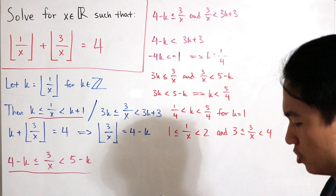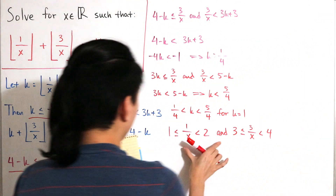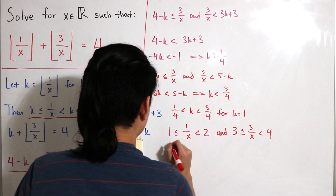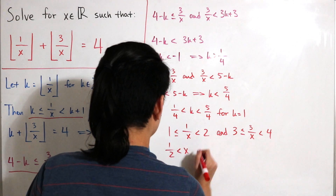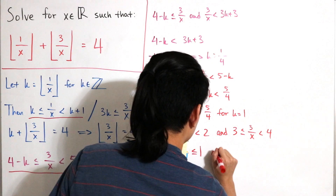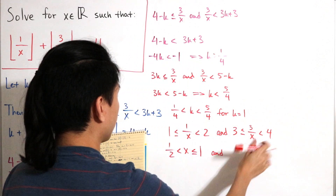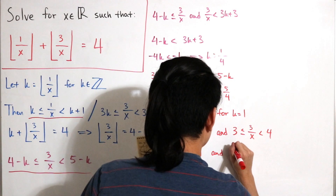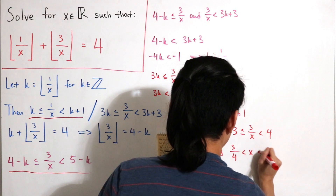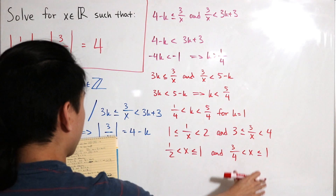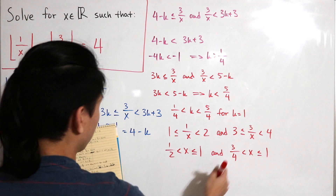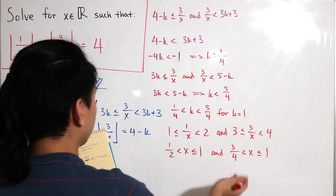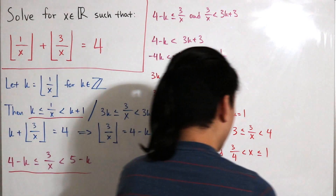Now we flip the reciprocals in both inequalities, which also flips the inequality signs. The first gives one half strictly less than x, less than or equal to 1. The second gives 3 over 4 strictly less than x, less than or equal to 1. Combining these, since 3/4 is greater than 1/2, we keep 3/4 strictly less than x less than or equal to 1.